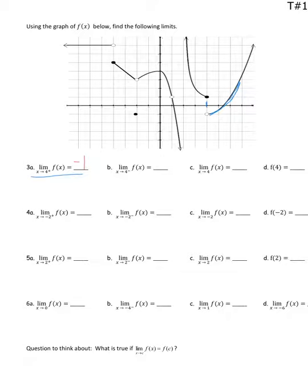What about the limit from the left? As I approach 4 from the left on f(x), what y value am I headed towards? I'm headed towards 1. So that limit equals 1. Since I've already done those, I can write the overall limit answer quickly. The overall limit asks: does the limit from the left equal the limit from the right? Because they are not equal, I put 'does not exist.' What is f(4)? We all say 1.